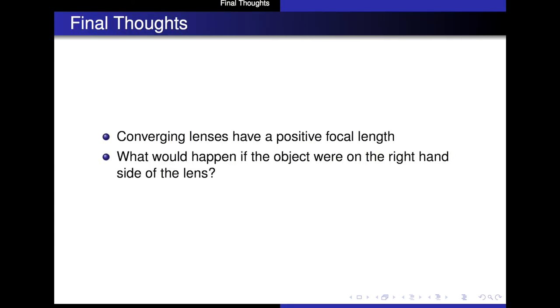So a few final thoughts. Number one, the converging lens has a positive focal length. We need to use the correct sign convention when we're dealing with the thin lens equation. And number two, what would happen if the object were on the right-hand side of the lens, rather than the left-hand side.